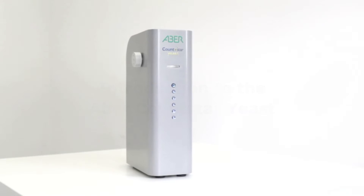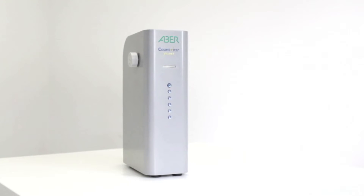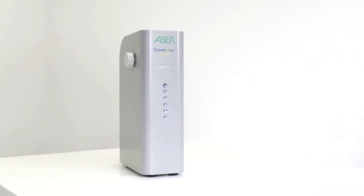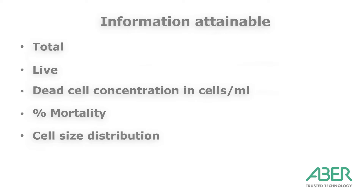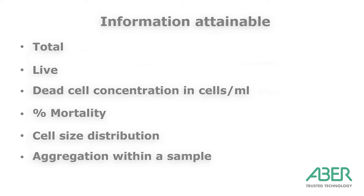The CountStar yeast is an automated cell counter for analysing yeast samples. It gives users a variety of information such as total, live and dead cell concentration in cells per mil, along with percent mortality, cell size distribution and aggregation within a sample. It has been shown to be more reliable than manual cell counting techniques with smaller deviation, and takes under 20 seconds to analyse the sample, thus making it less labour intensive.